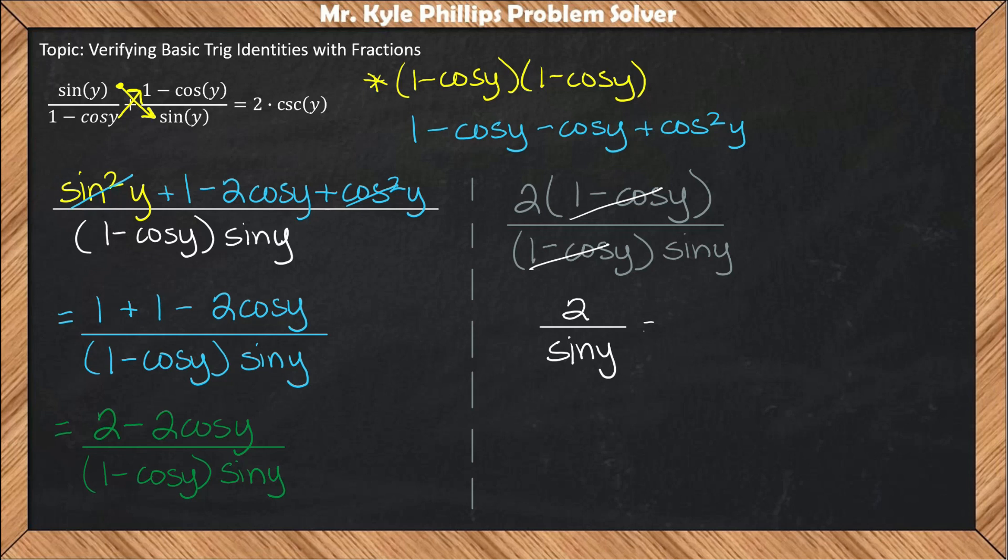We're trying to verify that this equals 2 times cosecant y. This is true because cosecant is a reciprocal identity. 1 over sine is the same as cosecant, so 2 over sine is the same as 2 times cosecant y.